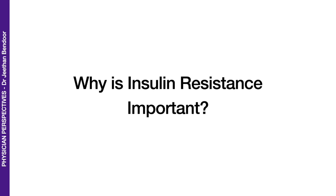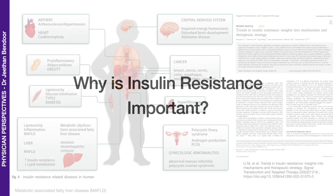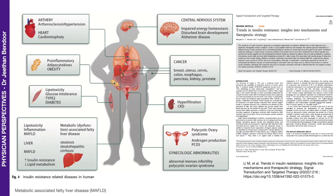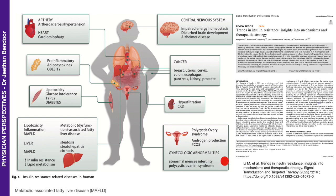Why is insulin resistance so important? That's because it affects pretty much every organ in the body: the heart, the arterial system, fat cells. Obesity is a huge problem these days. Type 2 diabetes is another big problem — centrally an insulin resistance challenge. MAFLD, metabolic associated fatty liver disease, central nervous system challenges — Alzheimer's is now called type 3 diabetes — cancer, kidney problems, and gynecological problems, to name a few.